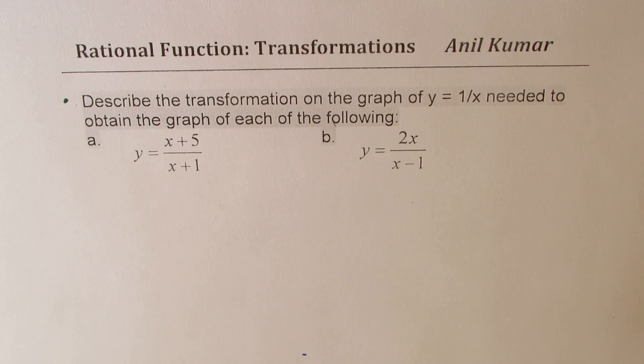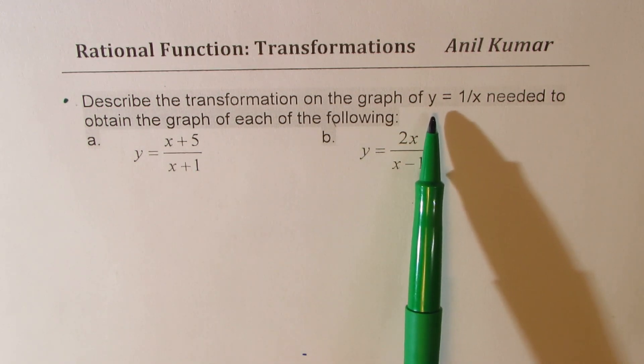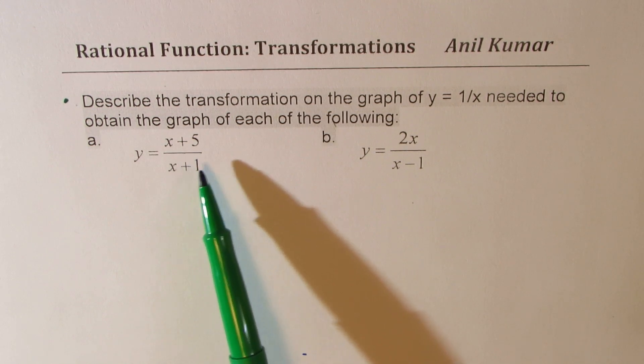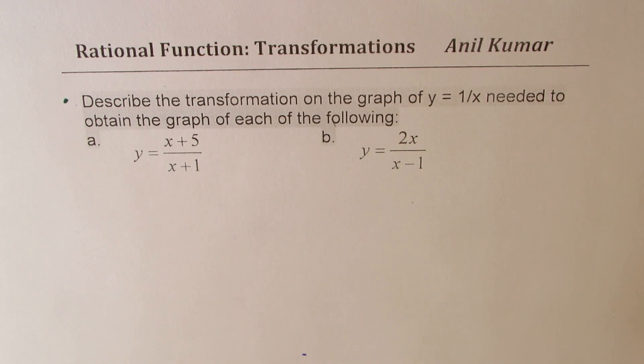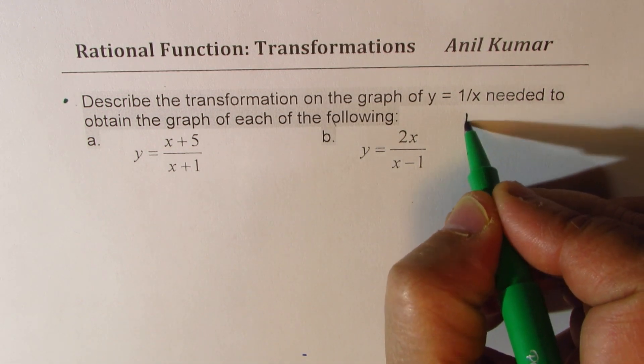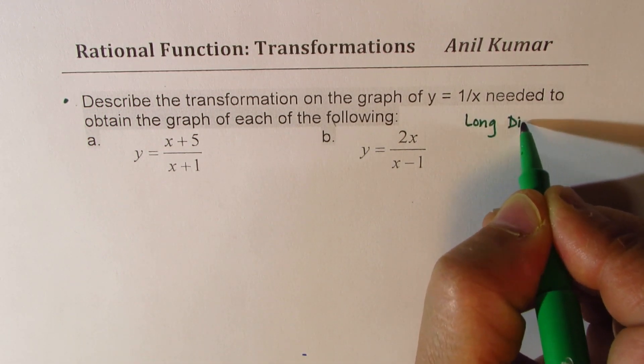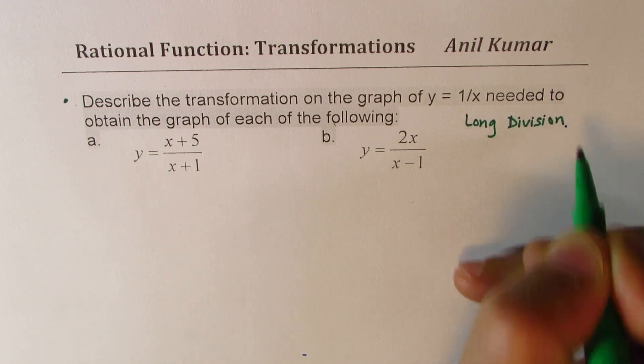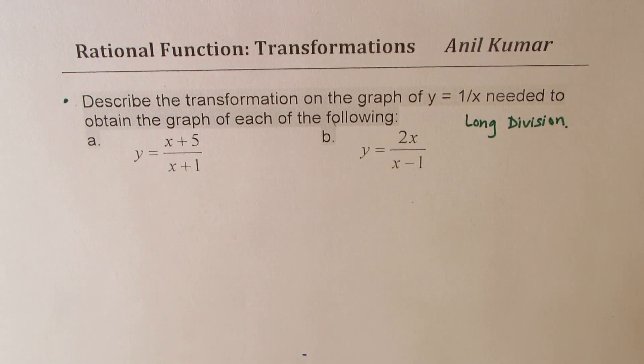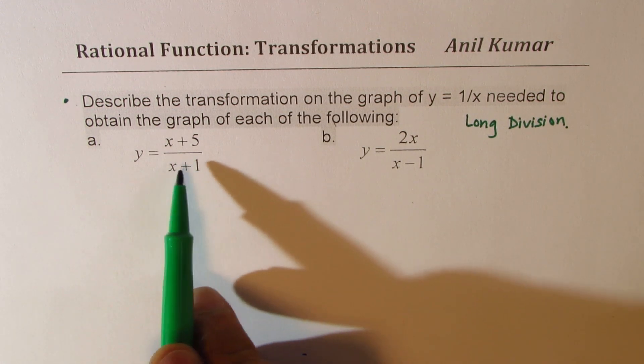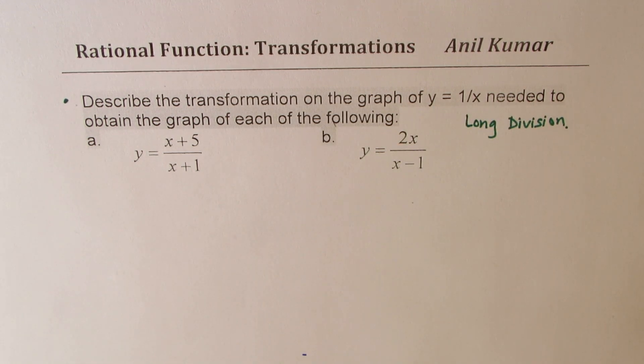Some of you can pause the video, answer the question and then look into my suggestions. Now to describe the transformation, when the parent function is 1 over x, we should get this in the form of 1 over x. One way is long division, which could be performed to write this rational function split into two parts. Now some of my students are not very familiar with long division so I'm adopting a different method.